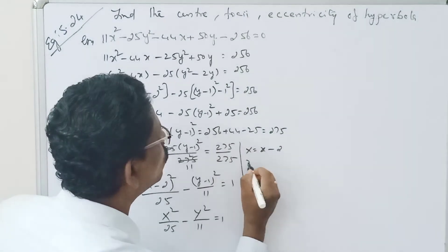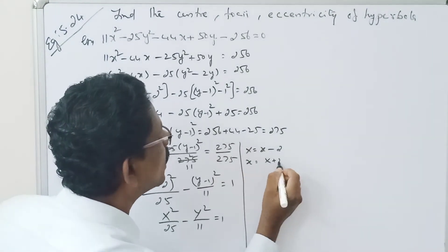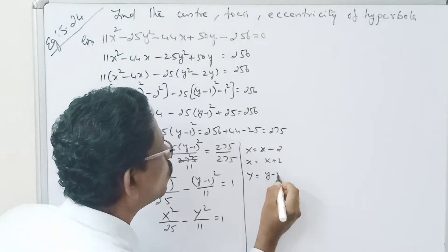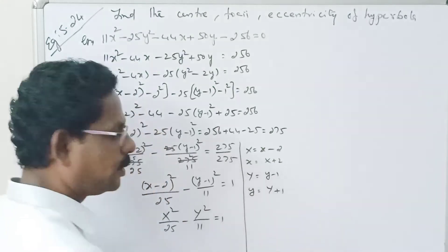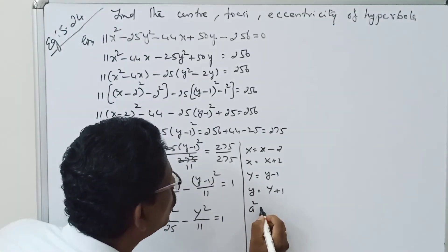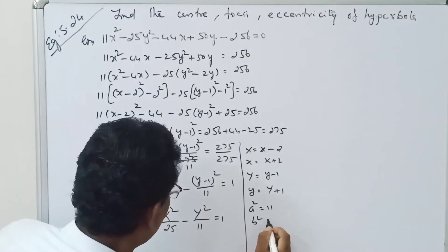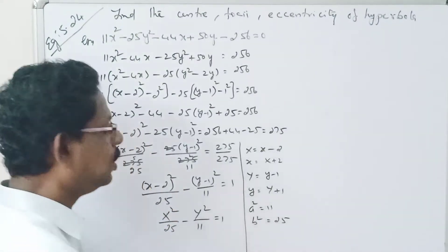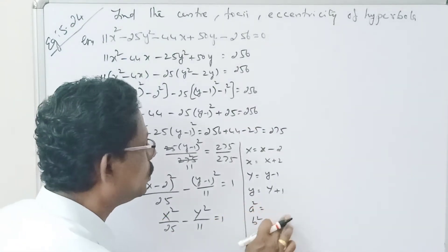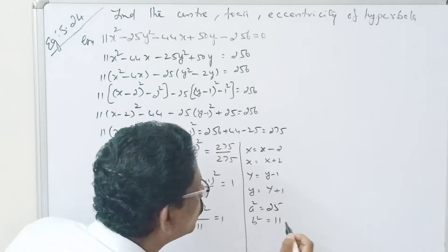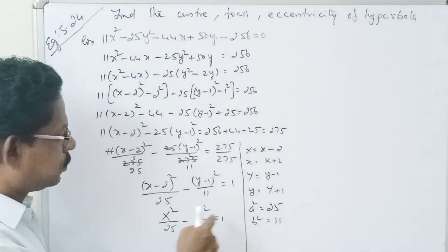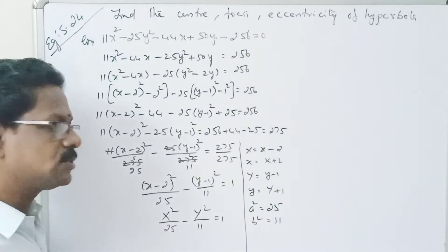This matches X²/a² minus Y²/b² = 1 with substitution X = x - 2 and Y = y - 1, where a² = 25 and b² = 11.